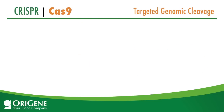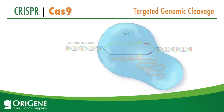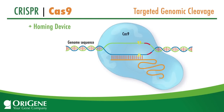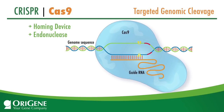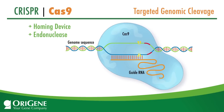Targeted genomic cleavage requires two key elements: a homing device and an endonuclease. In the CRISPR-Cas platform, the homing device is guide RNA or gRNA, and Cas9 is the enzyme introducing the double-stranded cleavage.